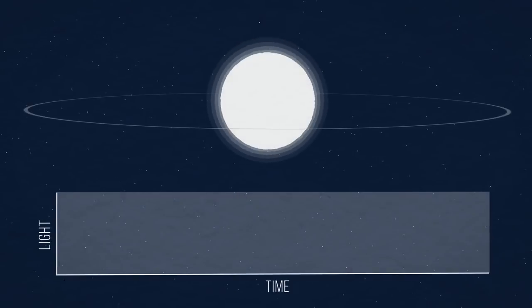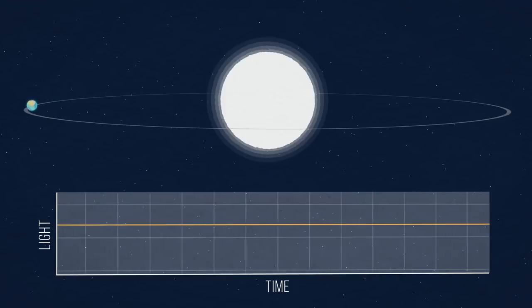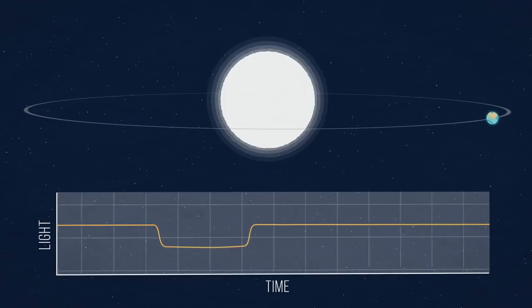The majority of known exoplanets have been discovered because they partially block the light of their host star. This is called a transit.